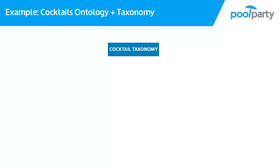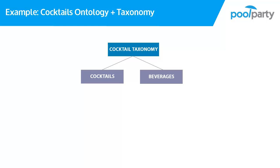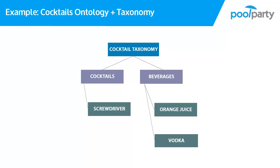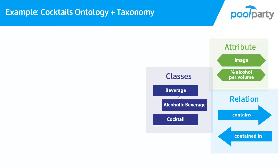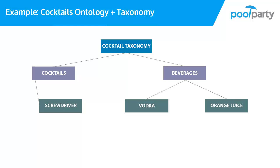We will use a small taxonomy to see how taxonomies and ontologies work together. Let's say we have a cocktails taxonomy with a concept scheme for cocktails and a concept scheme for beverages. To keep our example simple, let's start with one single cocktail — the screwdriver — and under beverages say we have orange juice and vodka. Now we want to apply our ontology onto our taxonomy. First we will have to classify the elements: we classify screwdriver as a cocktail, orange juice as beverage, and for vodka we apply the class alcoholic beverage. Since alcoholic beverage is a subclass of beverage, vodka will automatically also be classified as beverage.